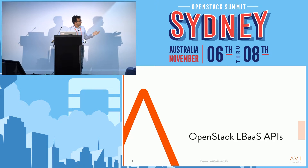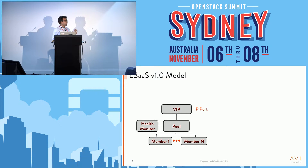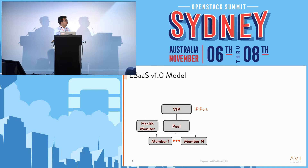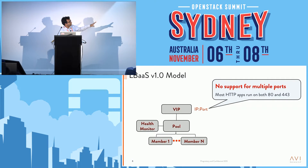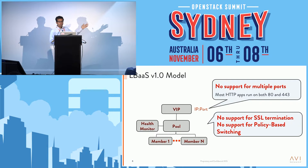Let's switch to what's in OpenStack today in terms of the LBaaS APIs. LBaaS version 1 was introduced in Grizzly — a very simplistic model. There's a concept of a pool with member servers (IP addresses), a VIP which is both IP and port on which the application receives traffic, and a health monitor for pool members. Unfortunately, it didn't have support for multiple ports, whereas most HTTP applications run on both port 80 and 443, no SSL termination support, and no policy-based load balancing.